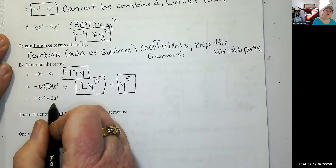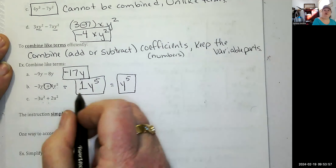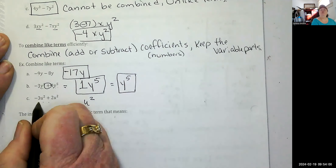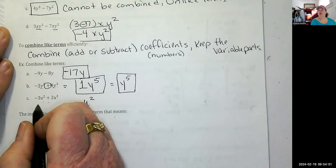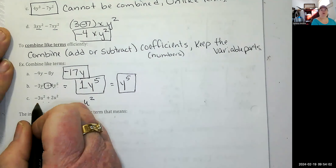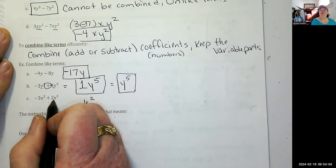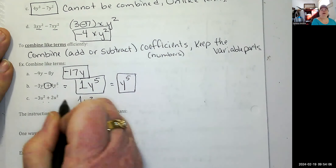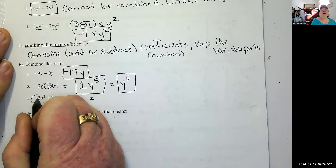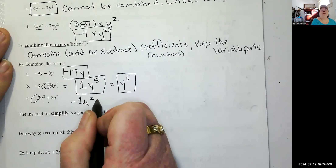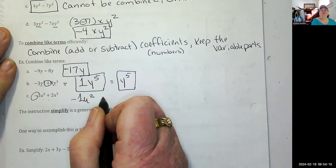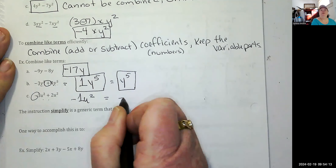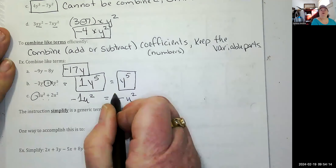Negative 3u² plus 2u²: u² will be in the answer. Negative three plus two — signs different, subtract, take sign of larger: 3 minus 2 is 1, sign is negative. So negative 1u², written as negative u².